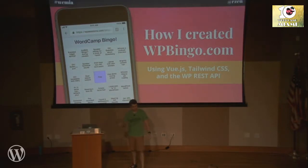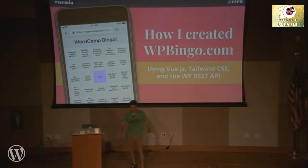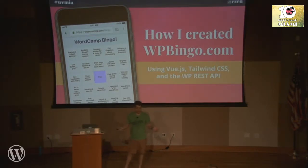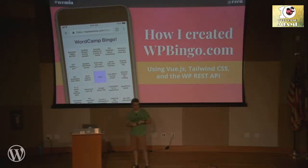I normally give the link out at the beginning, but I realize I spoil all the surprises by doing that. So just sit tight, we're going to ride this together. I'm going to talk about how I made WPBingo.com using the REST API, Vue.js, Tailwind CSS, and a whole bunch of other stuff.